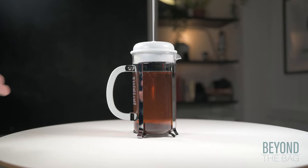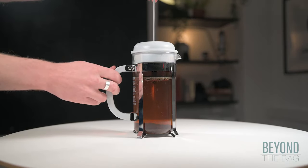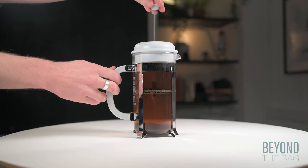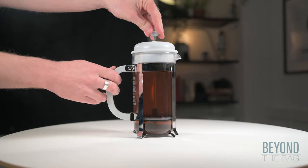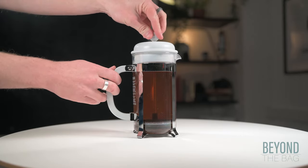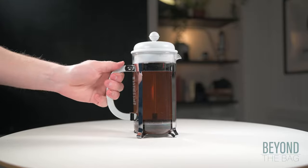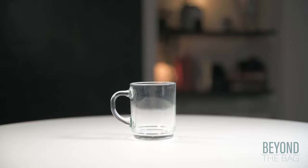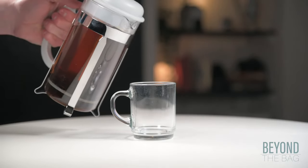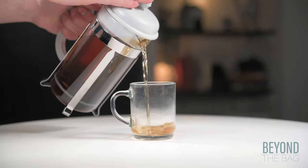Once you are ready to serve, press down on the rod. As the plunger descends to the bottom of the vessel, the leaves get trapped and the tea is left on top. From there, the tea is ready to be served straight from the French press. I can say it is a pretty satisfying pour.